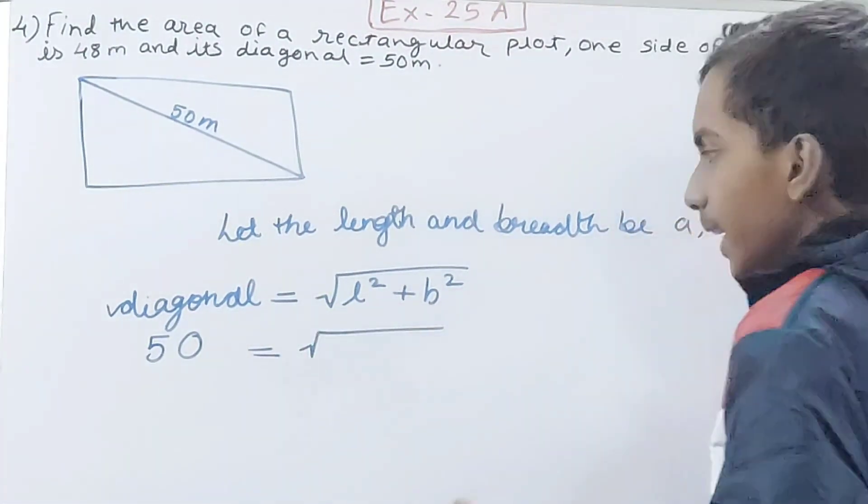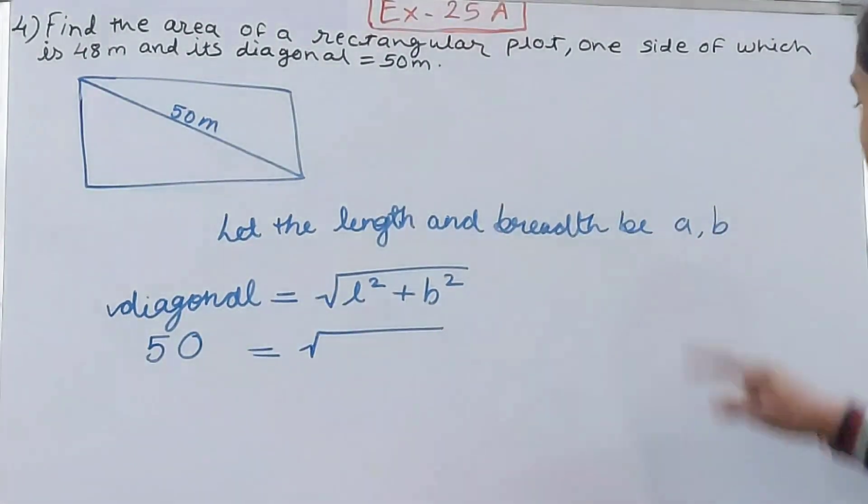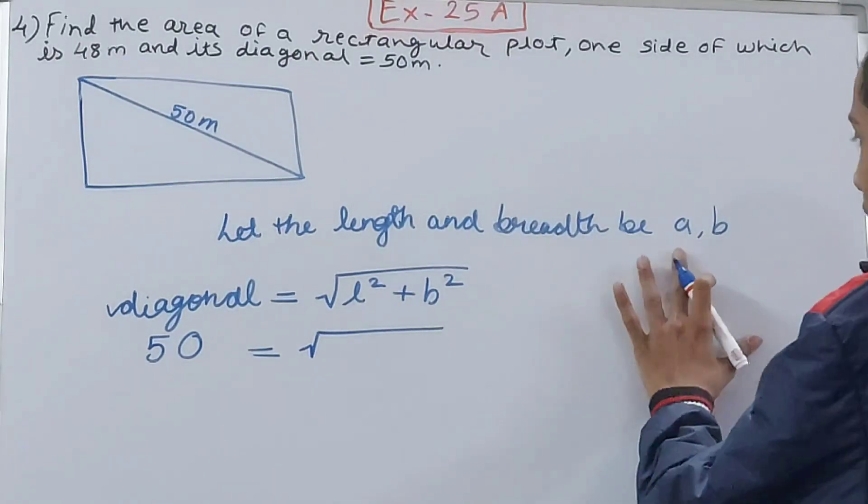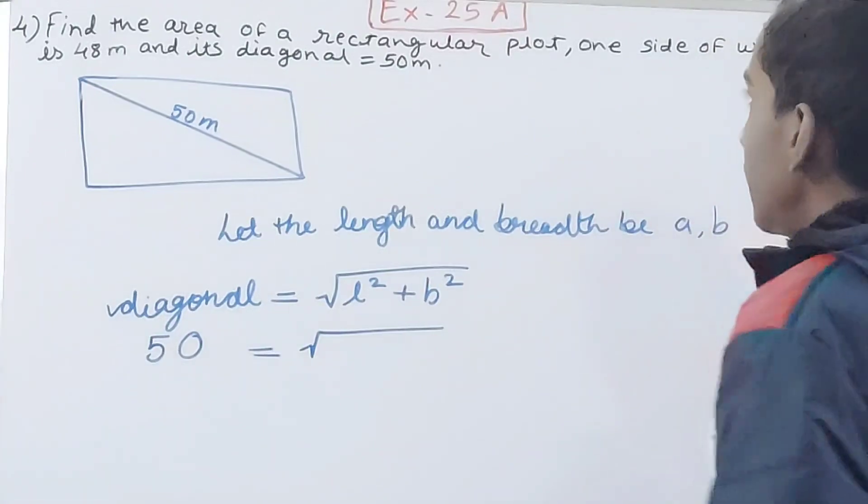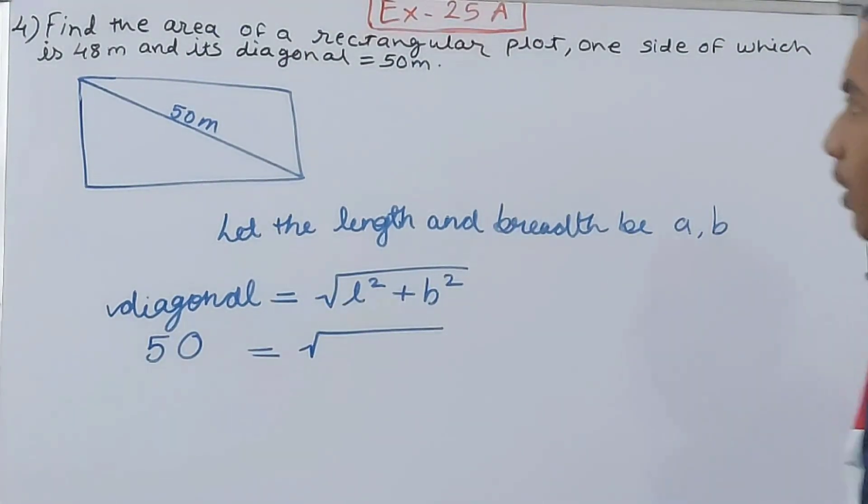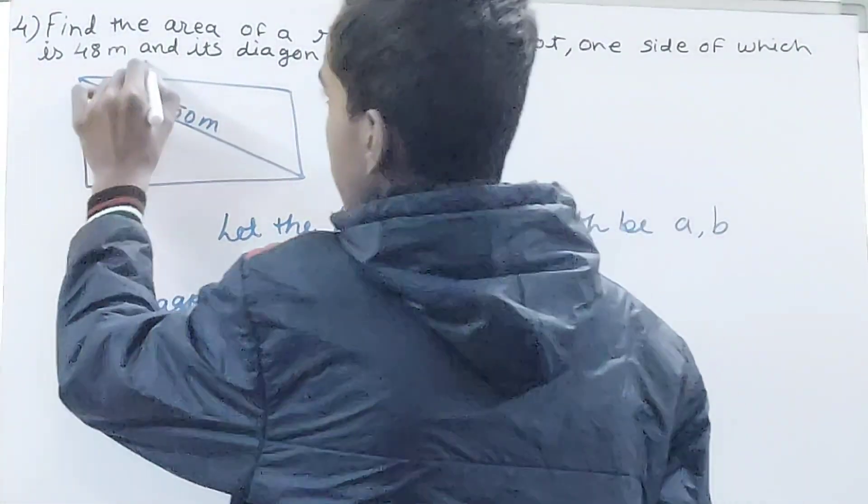And then we have l² plus b², that means a² and b². Now here comes the thing, it is saying find the area of a rectangular plot whose side is 48 meters.